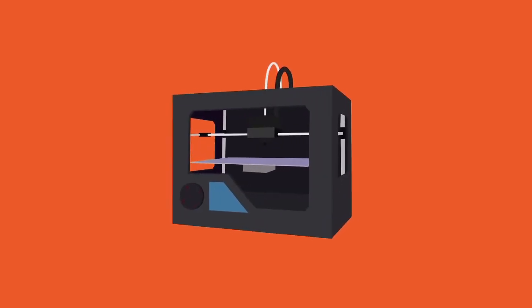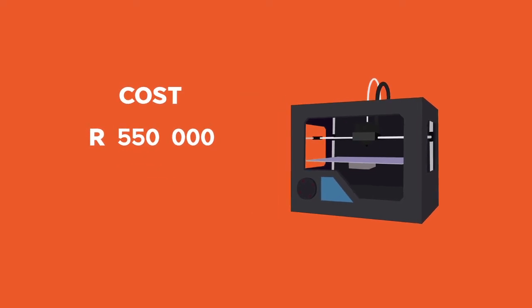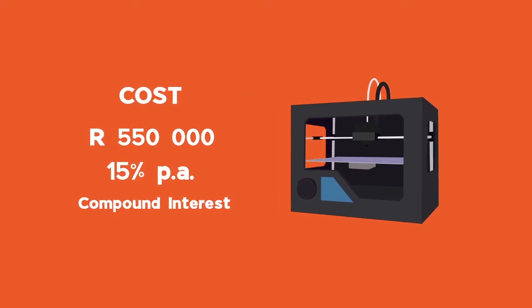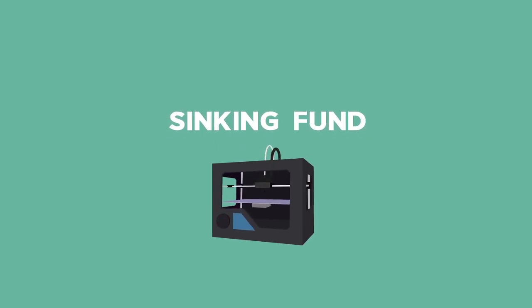Let's look at an example of a sinking fund. 3D Print Company purchased machinery at a cost of R550,000, which is expected to rise in cost at 15% per annum compound interest and depreciate in value at a rate of 8% per annum compounded annually. A sinking fund is started to make provision for replacing the old machine.